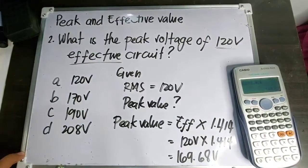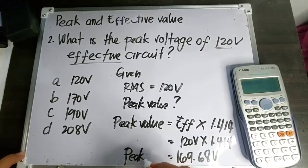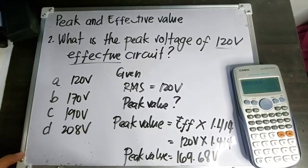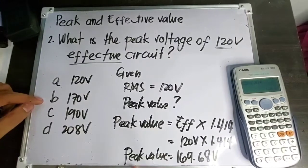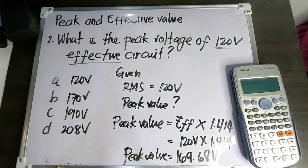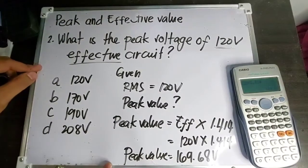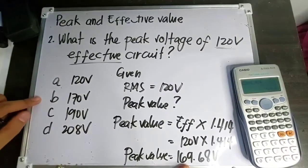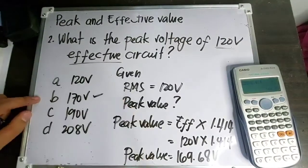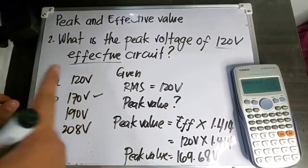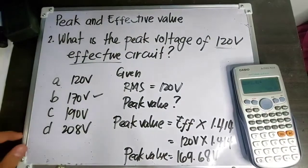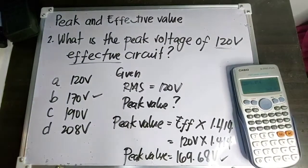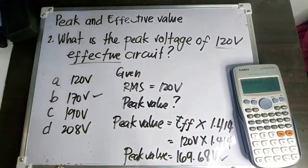Sa choices, tingnan natin. Walang 169.68 volts. Pero sa board exam, kung ano yung pinakamalapit na value dito, yun ang tamang sagot. Ang pinakamalapit sa choices sa 169.68 ay letter B — 170 volts. Minsan kasi sa mga choices sa board exam, hindi siya sakto kung ano yung lalabas sa calculator. Kailangan mong hanapin kung ano yung pinakamalapit na sagot base dun sa computed value mo.